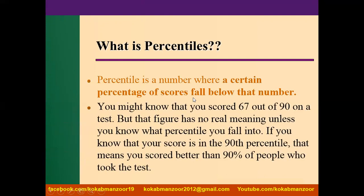For example, you got 67 out of 90 in a test. Where do you stand in the class? Apparently it seems like very good marks, but probably the entire class scored more than 67. So if you know your score is the 90th percentile, this means you did better than 90 percent of people in that test — only 10 percent scored more than you, while the rest 90 percent scored less. So percentile tells us where we stand in the data.